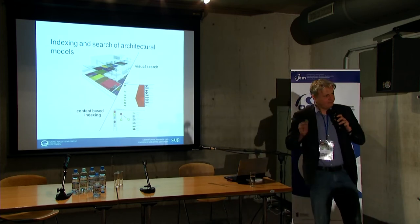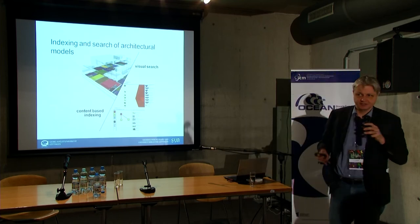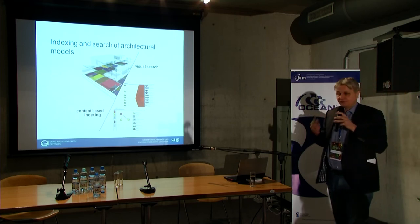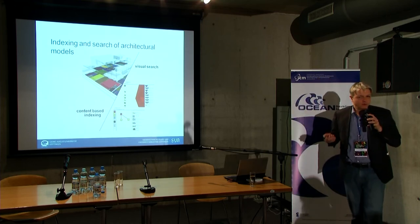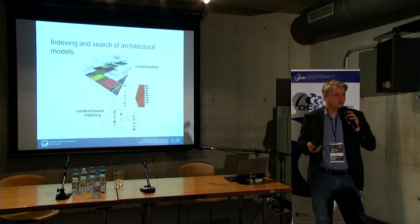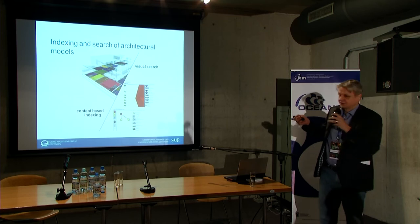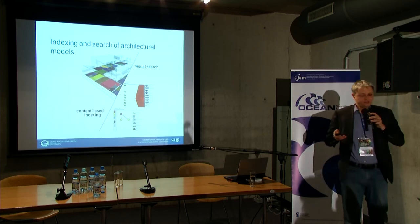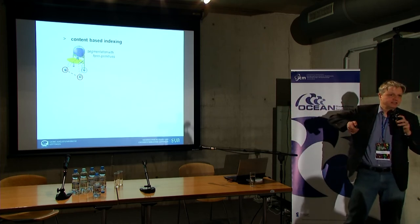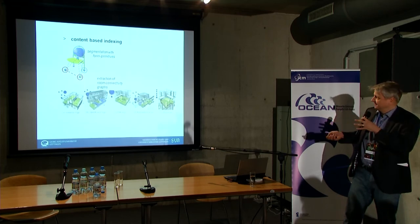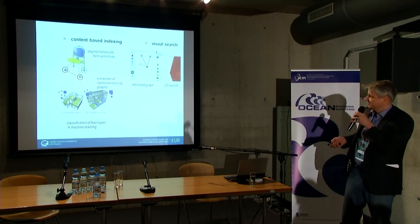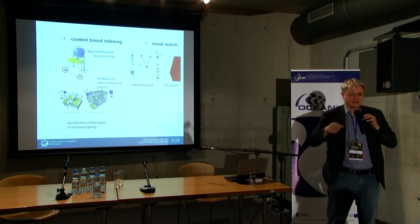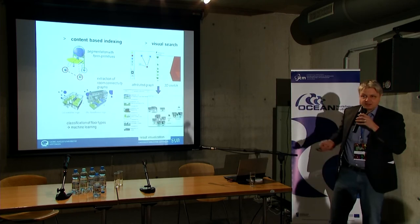This brings us to another problem. If we have all these different types of information in our catalogue, we need to change our ways of looking for content. I have a library background — the last 10 years involved the idea that if we have things like 3D models in our catalogue — the library I worked for before Göttingen is also the German Library of Architecture — we put architectural models and CAD files in our catalog and explored how we can search for them by sketching, saying I want a model of a house with a floor and five rooms attached.